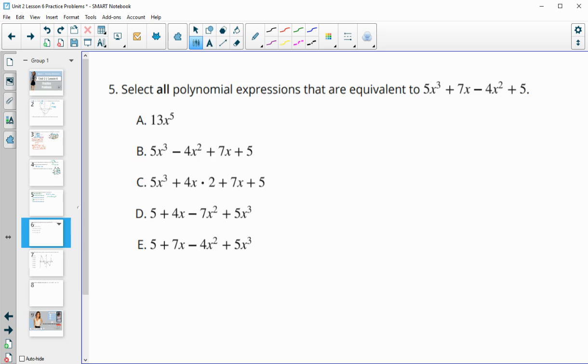Number five, select all polynomial expressions that are equivalent to this one. So we don't have any like terms here. So it's certainly not going to be a. So let's check these: 5x cubed, 5x cubed, negative 4x squared, negative 4x squared, positive 7x in both and positive 5 in both. So this one is good.